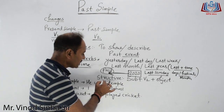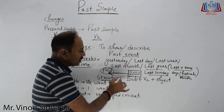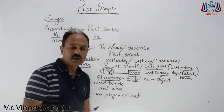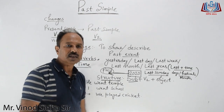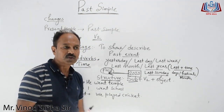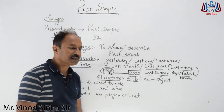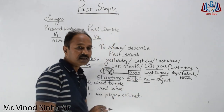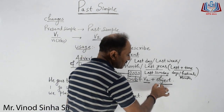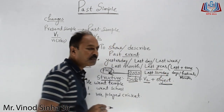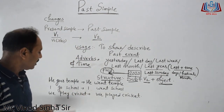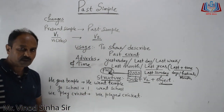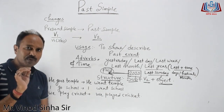Past simple ka structure yeh raha: Subject — as usual, jaisa angrezi mein kisi bhi vaakya mein hota hai, pehle subject likhta hai — phir second form, that's it. Iske baad agar object hai toh jod denge. Yeh bahut hi simple structure hai affirmative ka. Maine kuch examples transform karke rakhe hue hain pehle se hi, and I will compare and explain them.